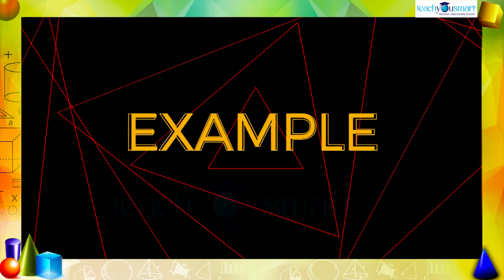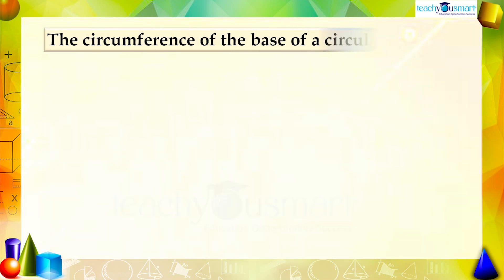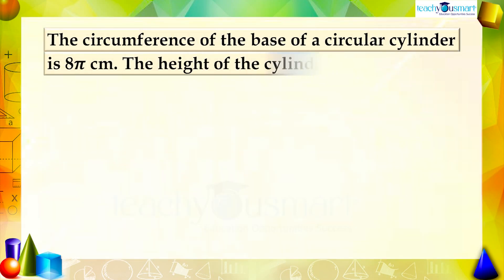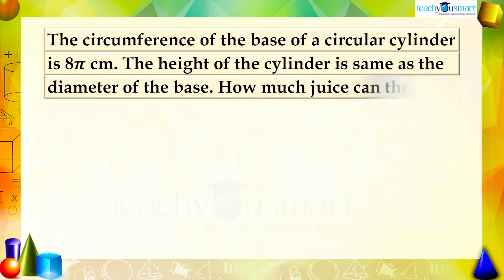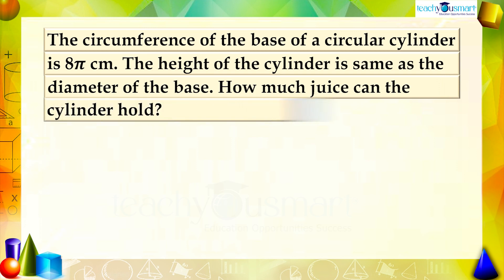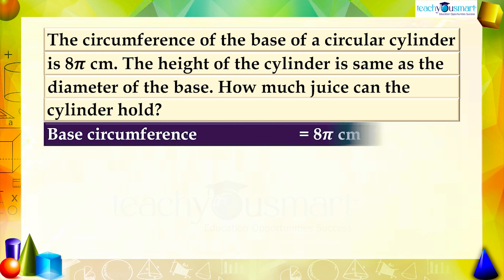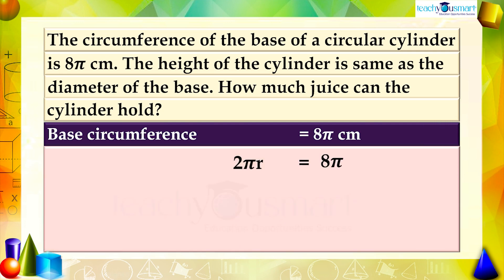Let's do another example. The circumference of the base of a circular cylinder is 8π centimeters and the height of the cylinder is the same as the diameter of the base. How much juice can the cylinder hold? Since the base circumference is 8π centimeters and the base is a circle, we have 2πr = 8π centimeters, so r = 8π divided by 2π, therefore r equals 4 centimeters.